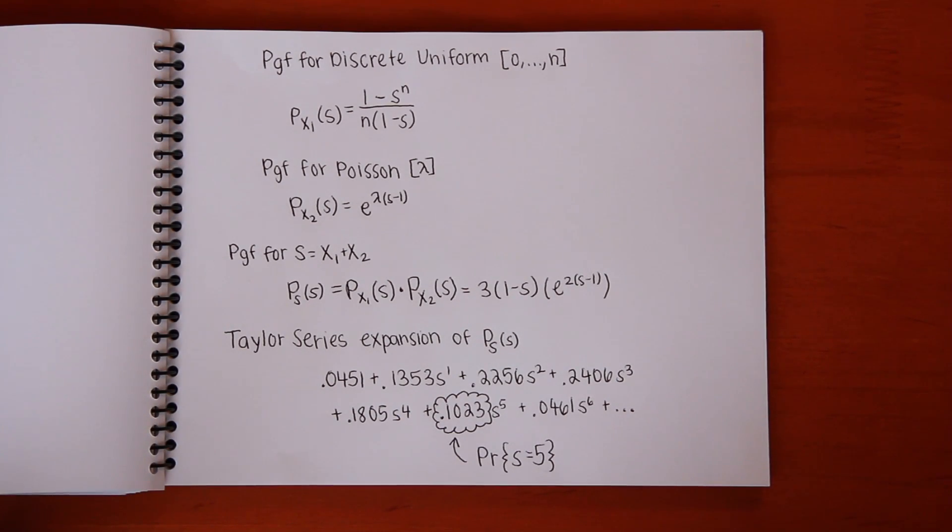But using PGFs, we know that the PGF of the sum equals the product of the PGFs for X1 and X2, whereupon the probability that the sum equals 5 is simply the coefficient of S to the power 5 in the Taylor series expansion, which is 10.23%.